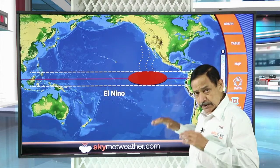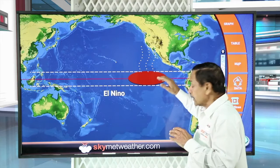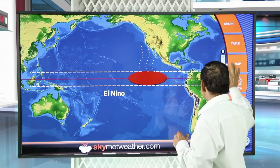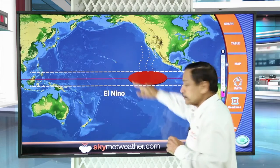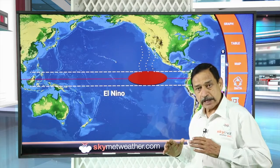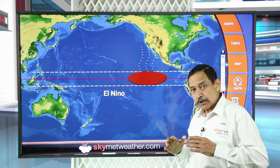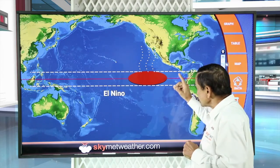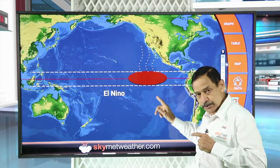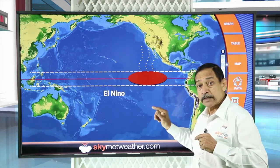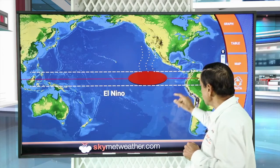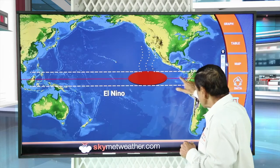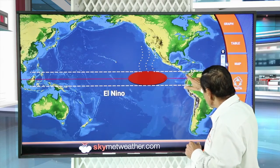Coming to La Nina, which at the moment is prevailing — it is the Pacific Ocean where this occurs. The Pacific is one of the largest and deepest oceans, covering almost about 100 million square kilometers. The Nino indices we are talking about are also covered over an area of about one lakh plus square kilometers, near and over the equator. This is the Pacific area, and this is South America, and this is Peru.